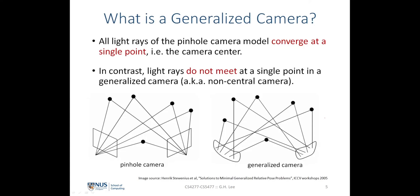So far in all our lectures, we have been looking at the pinhole camera model, where all the light rays that come into the standard pinhole camera converge at a particular point — the camera center. All the light rays project onto the image but converge at a single center of projection. One illustration of this is in the two-view geometry of a pinhole camera, where lights reflected from 3D points converge at a single center of convergence, and this is true for both views shown.